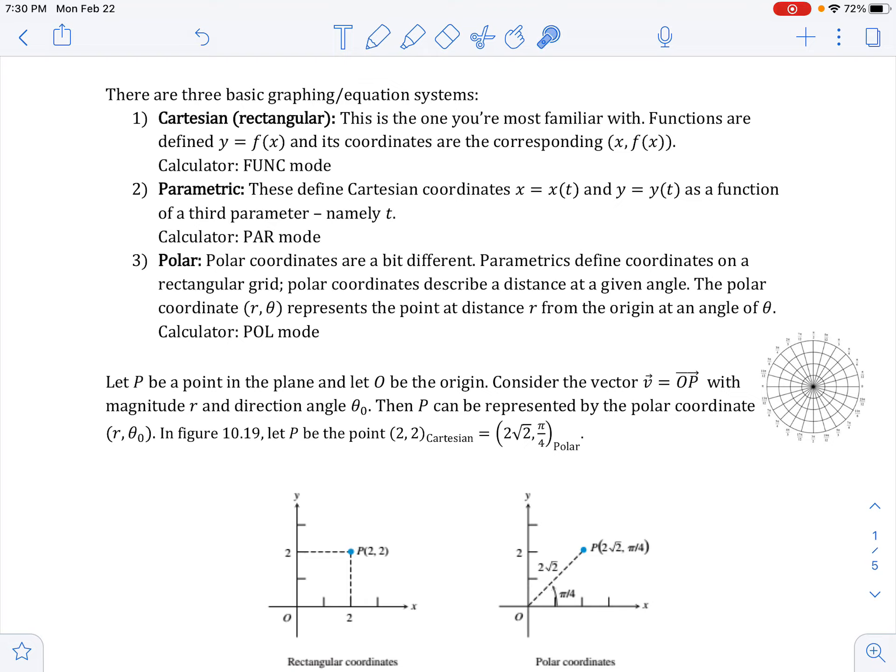First thing we want to look at is there are three basic graphing equation systems. One is the Cartesian or rectangular system, and it's the one that we use all the time. You know, y equals f of x, and all the coordinates are described as x and f of x, an x and y location, and we use our function mode when graphing.